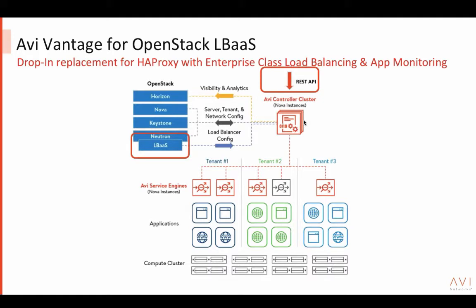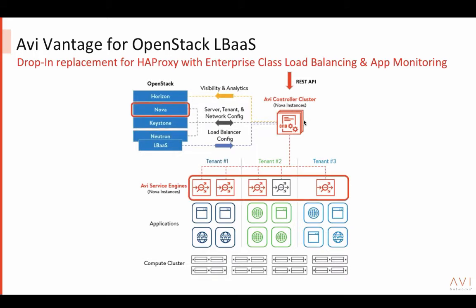There are two ways to configure load balancing and other policies: you can use the LBaaS APIs, or as many customers do, use the REST API directly into AVI. We've also integrated AVI's UI directly into Horizon. When you log in, AVI controller talks to Keystone for importing tenants, users, and role information — no need to define a separate set. Based on tenancy, it talks to Nova and spins up service engines as Nova instances, either dedicated per tenant or shared across multiple tenants.